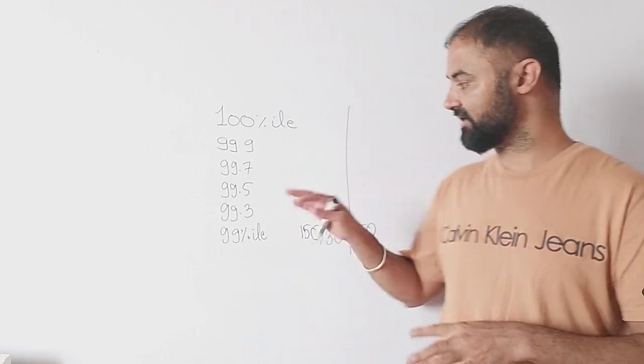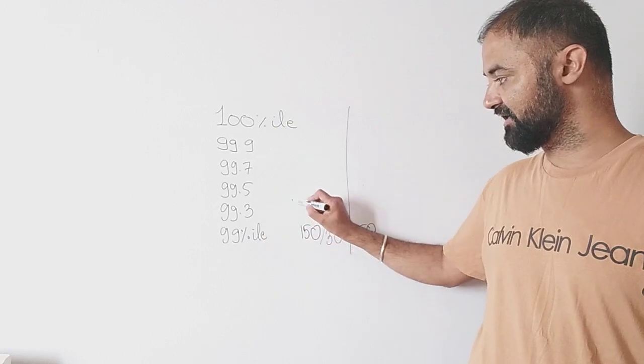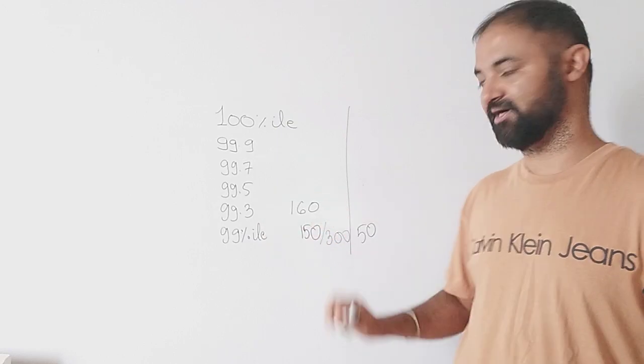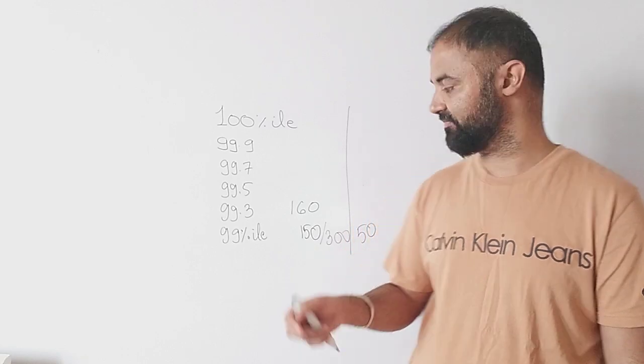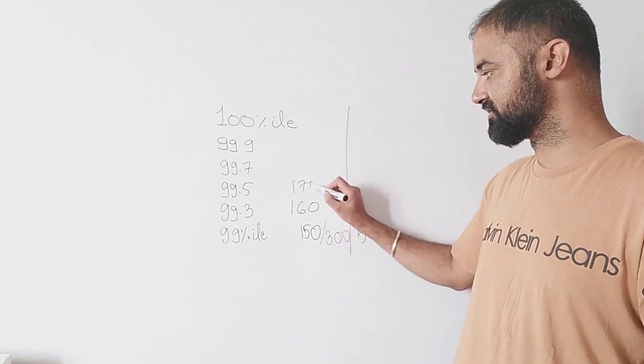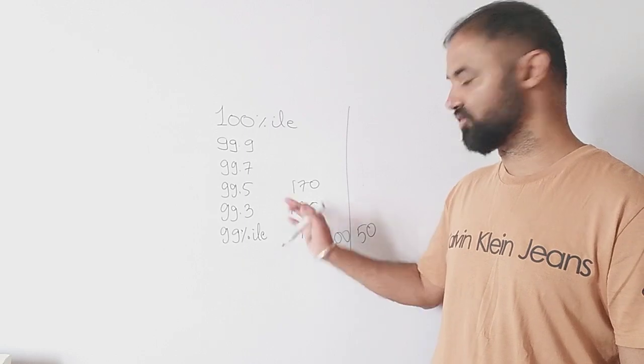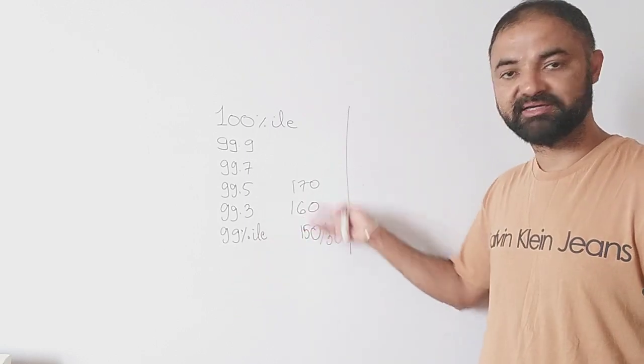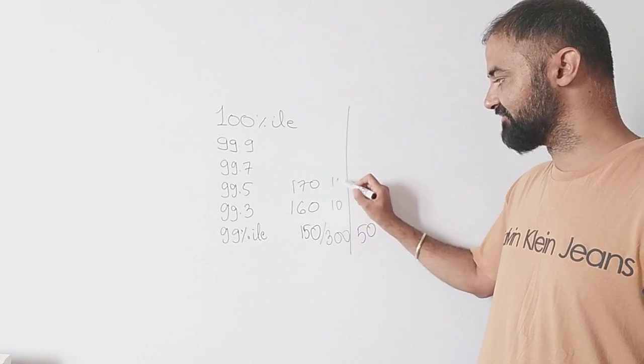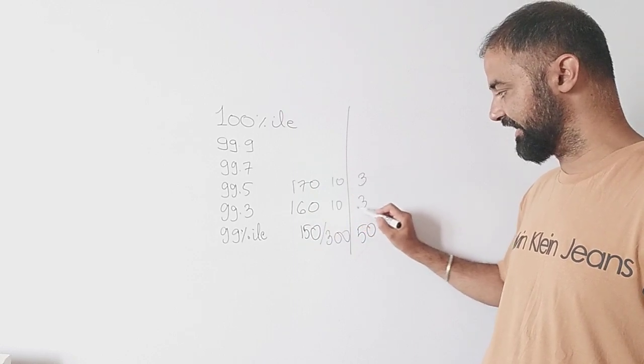If I increase the target to 99.3, that's around 160 marks out of 300. 170 you will touch 99.5 percentile. So if you divide by 3, it's not a major increment - hardly 3 marks, 10 marks each. 10 marks divided by 3, hardly 3 questions extra if I can solve, I can increase my percentile accordingly.